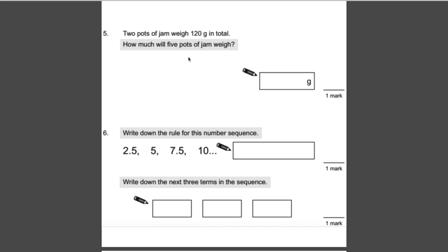Number 5: two pots of jam weigh 120 grams in total. How much will 5 pots of jam weigh? If you get a question like this, I recommend you try and work out how much one of the things weighs. We've got 2 pots of jam. So if 2 jams equals 120, then 1 jam must be half of that, which is 60. Now if I want to work out how many 5 pots will be, I just multiply 60 times 5, which is 300 grams.